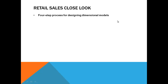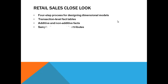We are going to take a very in-depth look at retail sales and design a data model for the retail sales industry. It is a four-step process for designing a dimensional model. We will consider transactional level fact tables, additive and non-additive fact tables, sample dimensional table attributes, causal dimensions such as promotion, degenerate dimensions such as transaction ticket number, extending an existing dimensional model, snowflaking dimension attributes, avoiding too many dimension traps, and surrogate keys.